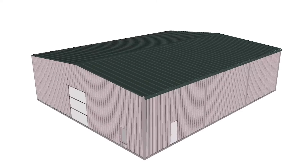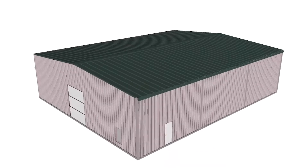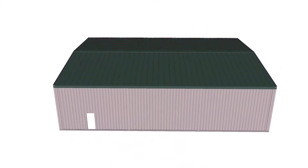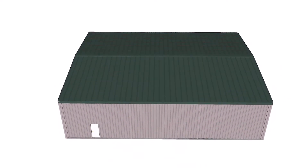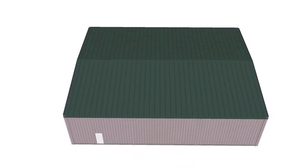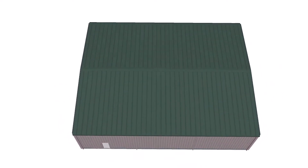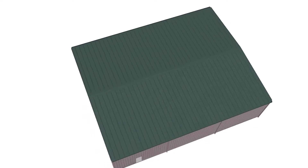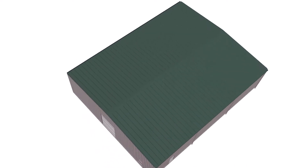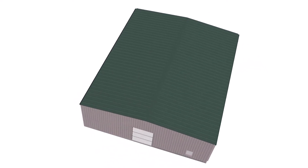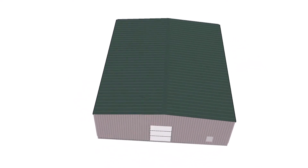Metal building systems are not always simple box buildings, but this is a great place to start as we introduce the components of a basic metal building system. Basic roof shapes are either a gable roof, sloping in both directions from the ridge, or a single slope roof.